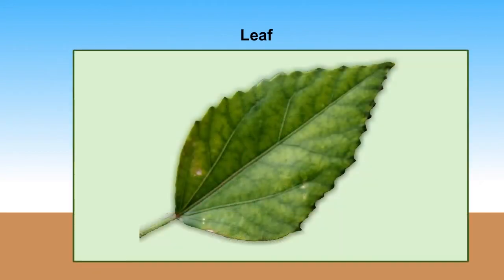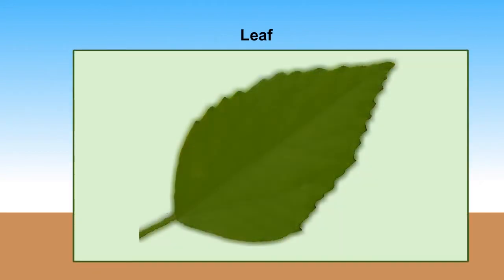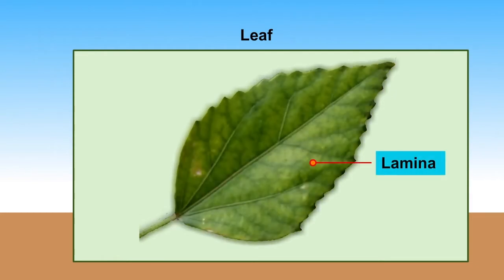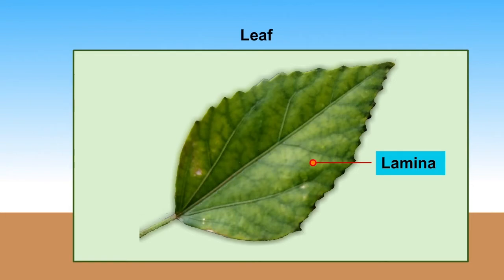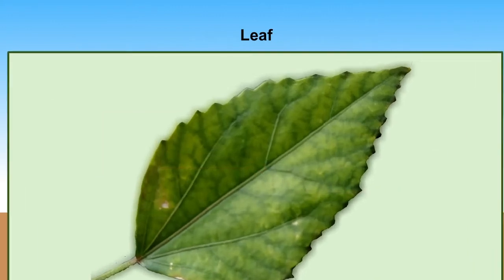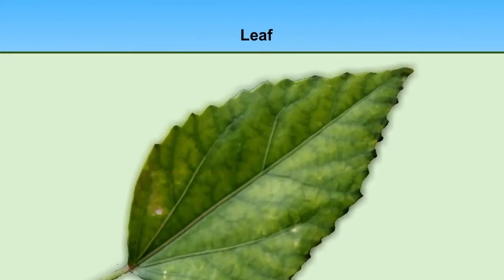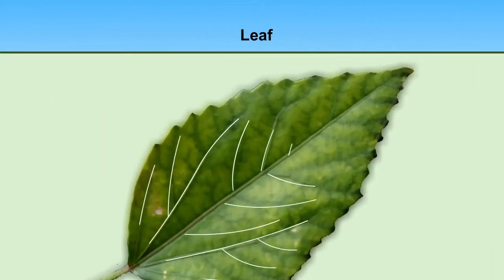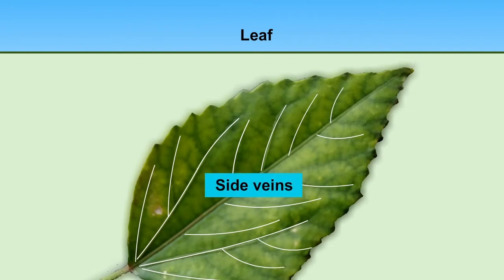The thin flat part of the leaf is called the lamina. It is green in color. The thick line present on the center of the leaf is called the midrib or main vein. Many fine lines arising from the midrib are called side veins.